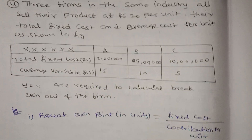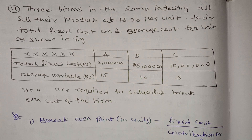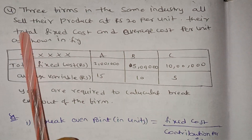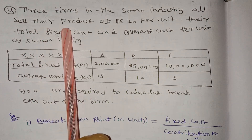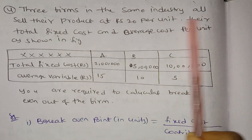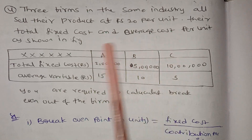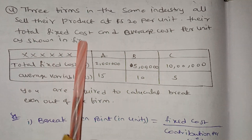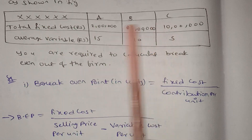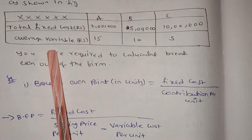3 firms in the same industry all sell their products at Rs20 per unit. Their total fixed cost and average variable cost per unit are as shown in the figure.